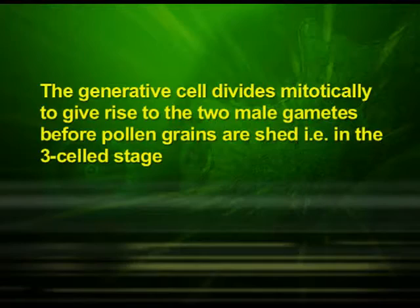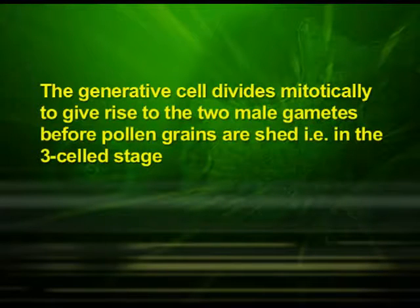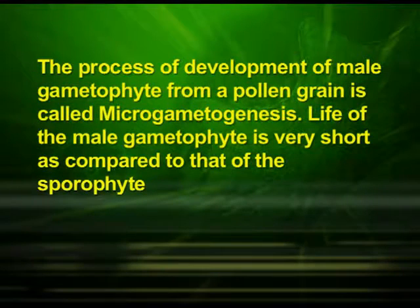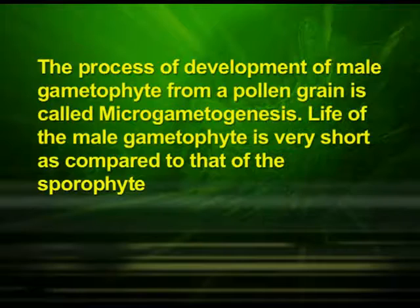In over 60 percent of angiosperms, pollen grains are shed at the two-cell stage. In the remaining species, the generative cell divides mitotically to give rise to two male gametes before pollen grains are shed, that is in the three-cell stage. During fertilization, when the pollen grain reaches the stigma, the intine grows out through a germ pore into a slender pollen tube. The generative cell divides into two male gametes. The process of development of male gametophyte from a pollen grain is called microgametogenesis.